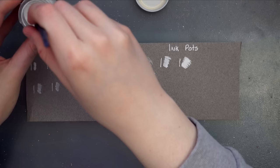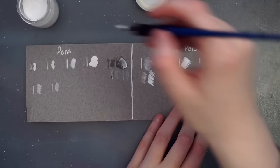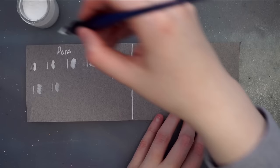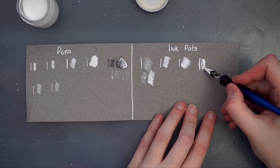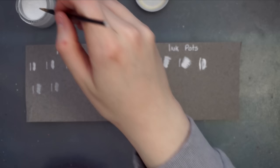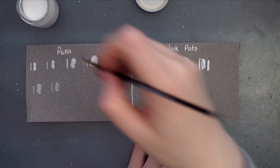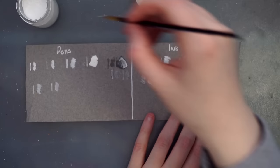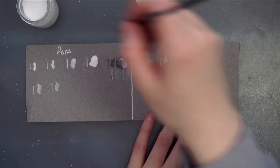Next is the Dr. PH Martin's Bleed Proof White. This is one of the inks that I hadn't tried out prior to filming this video, and this particular ink is an extremely strange consistency. It's almost like icing or a marshmallow fluff, and so originally I tried it with a dip pen, which really did not go very well, so I switched to a brush and it worked a whole lot better. This one is definitely brush only.